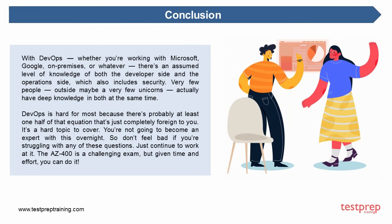With DevOps, whether you're working with Microsoft, Google, on-premises, or whatever, there's an assumed level of knowledge of both the developer side and the operations side, which also includes security. Very few people — outside maybe a few unicorns — actually have deep knowledge in both at the same time. DevOps is hard for most because there's probably at least one half of that equation that's completely foreign to you. It's a hard topic. You're not going to become an expert overnight, so don't feel bad if you're struggling. Just continue to work at it. The AZ-400 is a challenging exam, but given time and effort, you can do it.